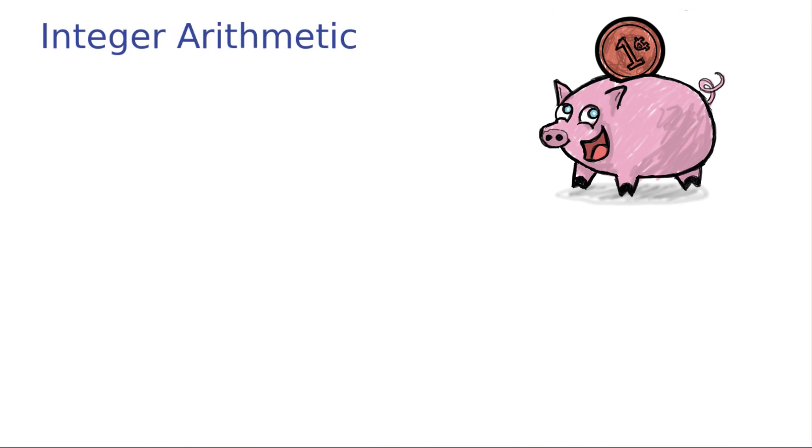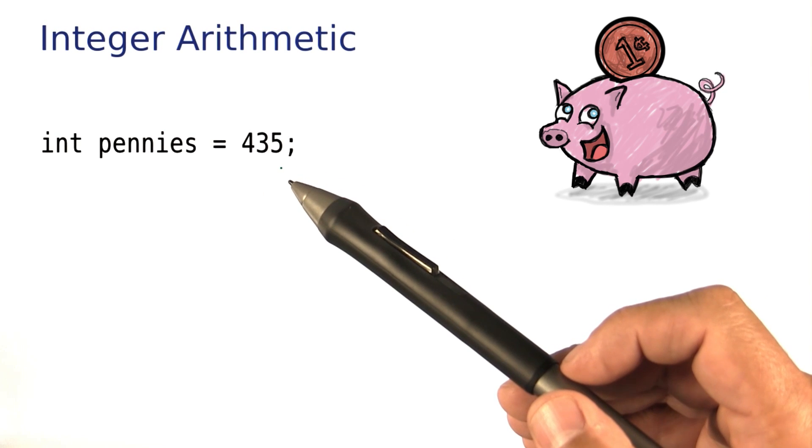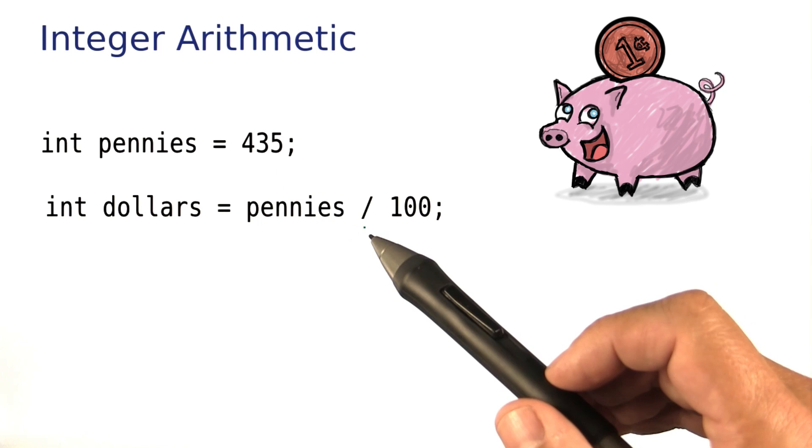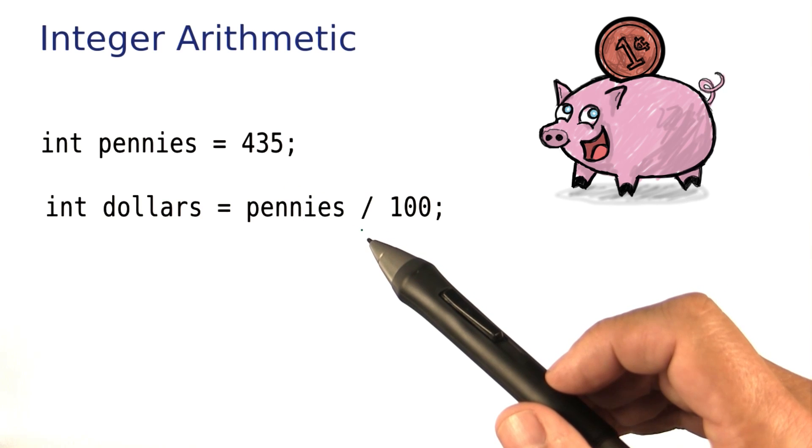Let's say I have a piggy bank full of pennies, and I want to know how many dollars do I have. In Java, I can compute that with a division operation, and there is a bit of a catch.